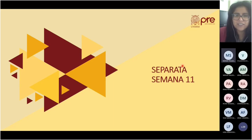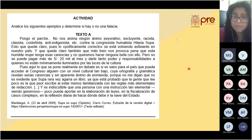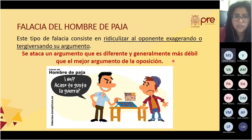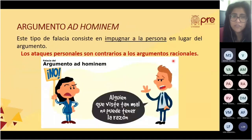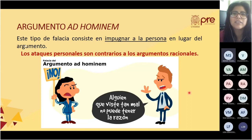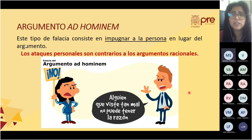Un estudiante pregunta sobre el ad hominem: si un hombre habla de fidelidad pero en su vida no es fiel, ¿podría considerarse ad hominem? La profesora responde: depende del argumento. Si el hombre argumenta que la fidelidad es importante porque genera confianza y establece un buen vínculo, y alguien le responde '¿por qué hablas de fidelidad si eres infiel?', se estaría atacando a la persona, no el argumento.